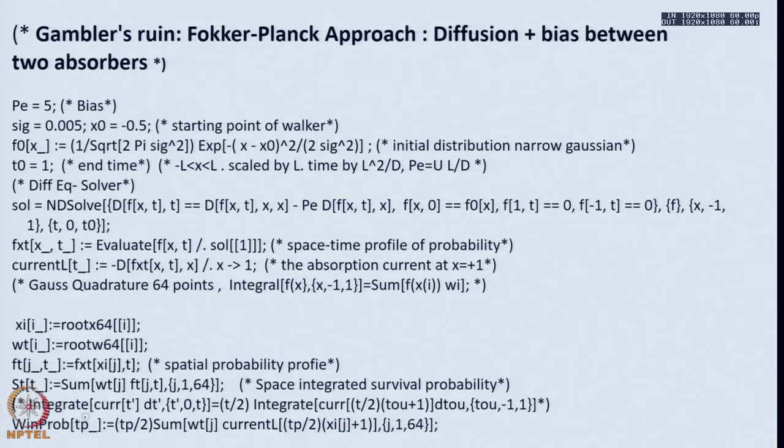We move from here to PPTs. Here is the outline of a program, written in a very condensed fashion. This is equivalent of a Gambler's ruin Fokker Planck equation, you can call it as a diffusion plus bias between two absorbers. It is amenable to analytical solution also by eigenfunction expansion methods, but it is very long winded. Here we only illustrate the numerical method.